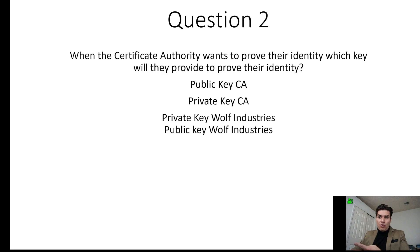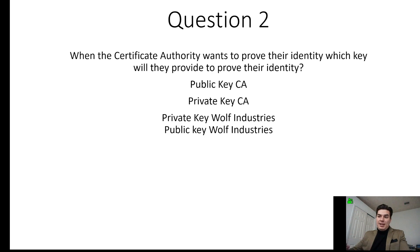Question number two: when the certificate authority wants to prove their identity, which key will they provide? They would provide their public key. So they'd sign their certificate with their private key, and then they would provide their public key. If Wolfe Industries was giving this out to customers, they would sign their certificate with their private key and then use their public key to prove their identity.